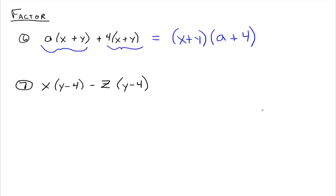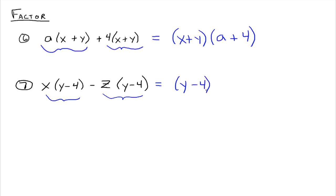The greatest common factor does not necessarily have to be a monomial — it can be an expression, a polynomial with more than one term. In this case the greatest common factor was x plus y. For the next one, x times y minus 4 minus z times y minus 4 — looking at both terms, they have y minus 4 in common. So factor y minus 4 out, and it leaves x minus z as the other factor.